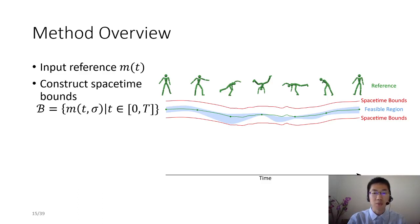Within a DRL framework, we sample an initial state from reference and run the current policy to generate trajectory as long as it stays inside spacetime bounds.